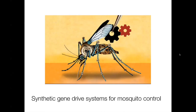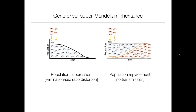Insecticides are very useful for targeting mosquitoes that come inside, but there are many species that do not come inside. Because resistance is such a major problem, there's a lot of work ongoing to develop gene drive systems that will target mosquitoes. None of these are yet implemented in the wild, but there's a lot of research in this area.